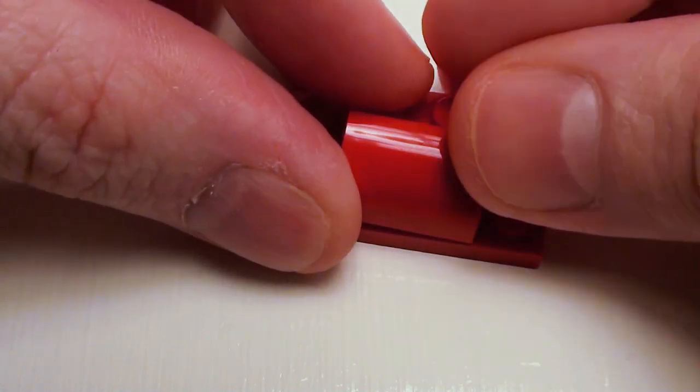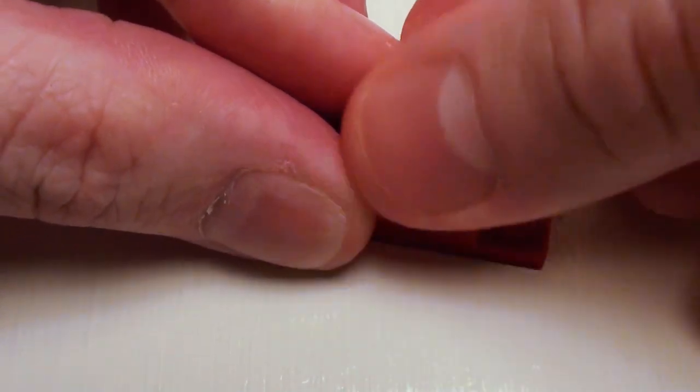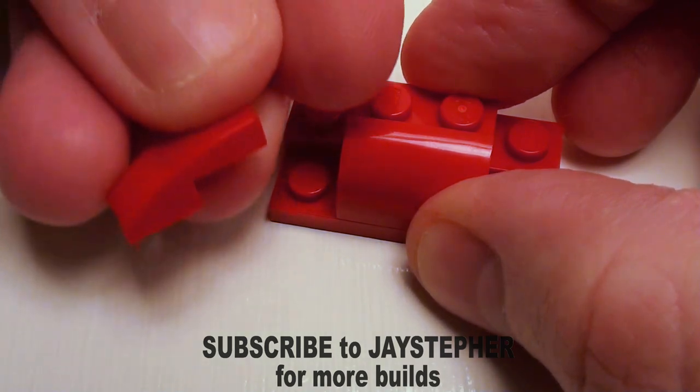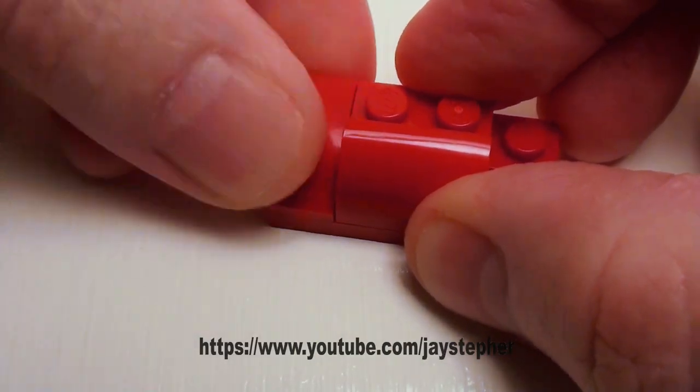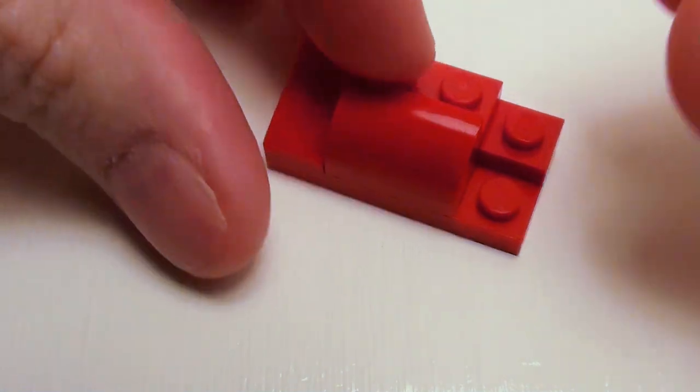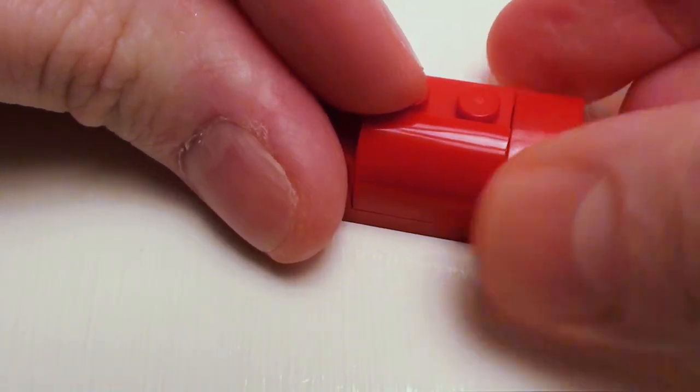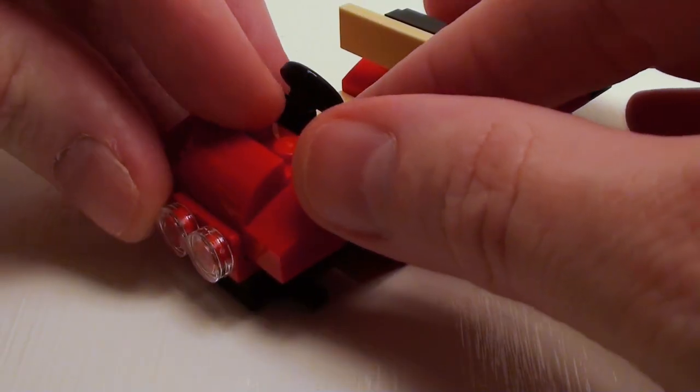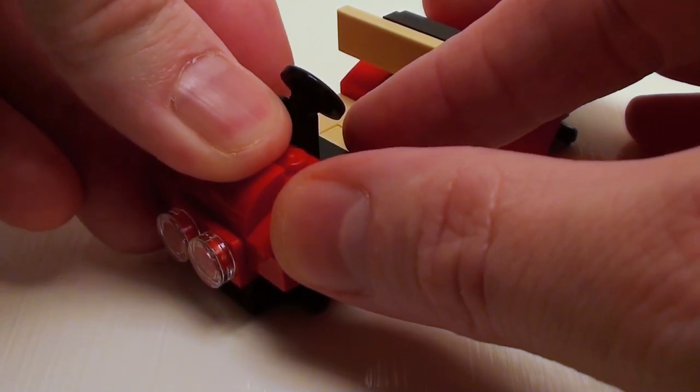In the front center, set down a 1 by 2 brick with half bow and on the sides a set of 1 by 2 by 2 thirds plate with bow. Now let's set our front end on our golf cart right here.